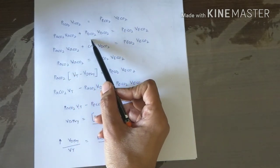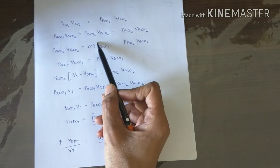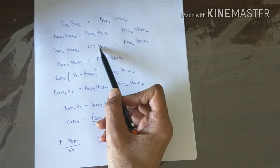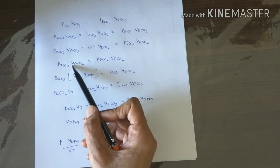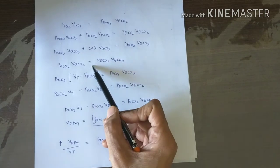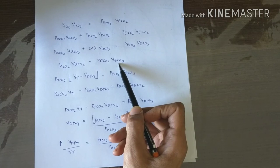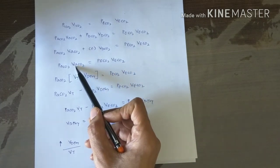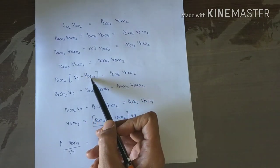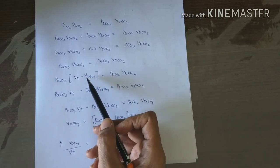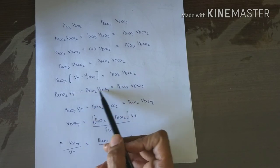The partial pressure of CO₂ in inspired air is approximately 0.3%, effectively zero. So the equation becomes: partial pressure of CO₂ in alveolar air multiplied by alveolar volume equals partial pressure of CO₂ in expired air multiplied by expired volume. The alveolar volume equals tidal volume minus dead space volume. Rearranging to solve for dead space volume gives us Bohr's equation.